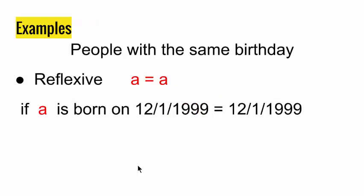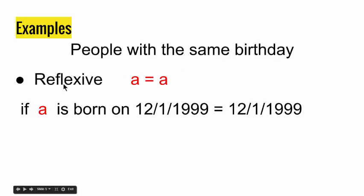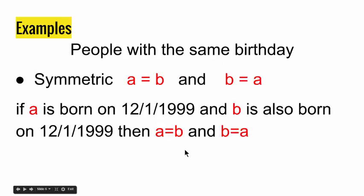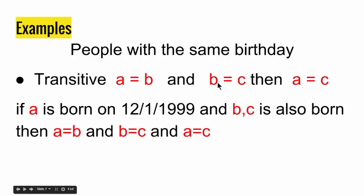Now let me give you examples that do have equivalence relation. If you have a set of people with the same birthday, this is an equivalence relation because all three properties exist. They are reflexive: A equals A — if A has a birthday of 12th January 1999, then A equals himself. They are symmetric: if A has the same birthday as B, then B equals A. They are also transitive: if A has the same birthday as B and B has the same birthday as C, then A has the same birthday as C. Therefore, people with the same birthday have an equivalence relation.